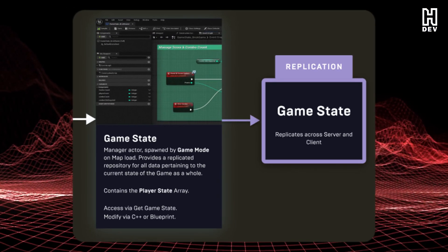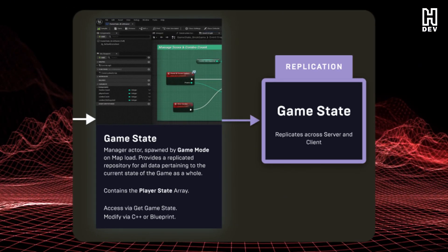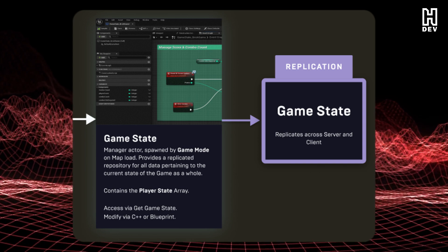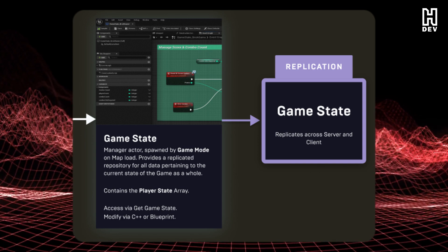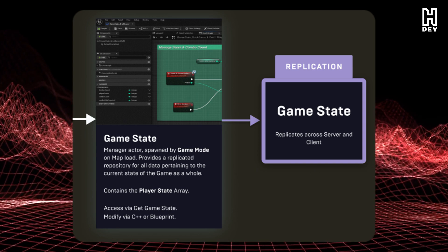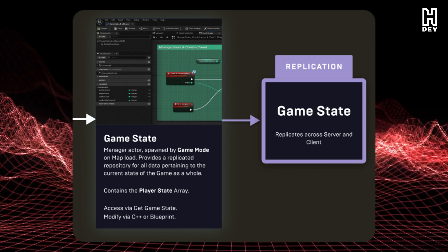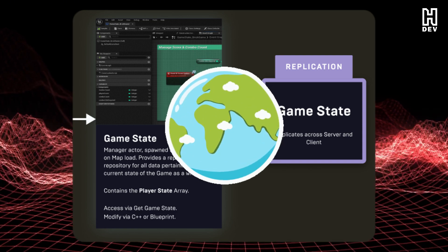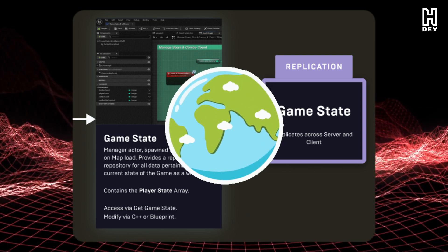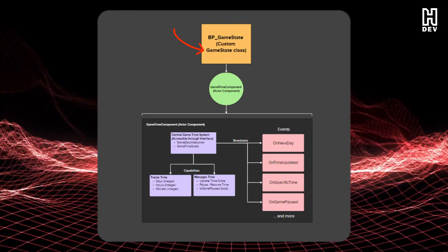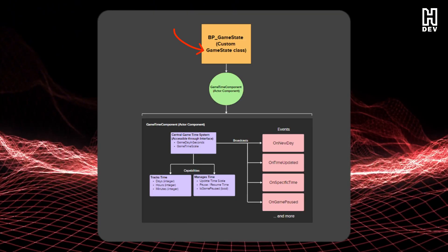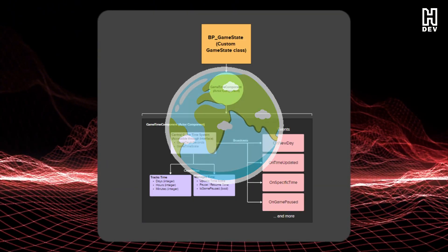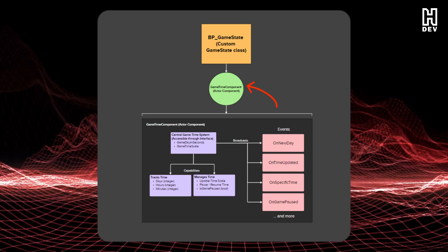As a quick refresher, the game state class is designed to store and replicate game-specific information that needs to be known by all players and actors, and is accessible globally — meaning anything in our game can access the information it stores. Because game state inherits from the actor class and is accessible globally, it's the perfect spot to attach our actor component.